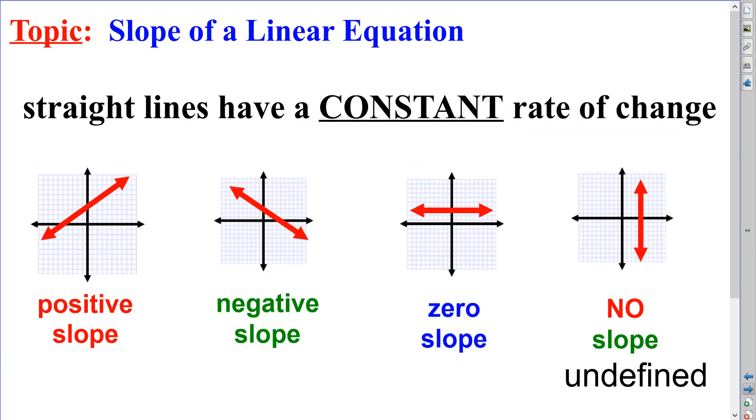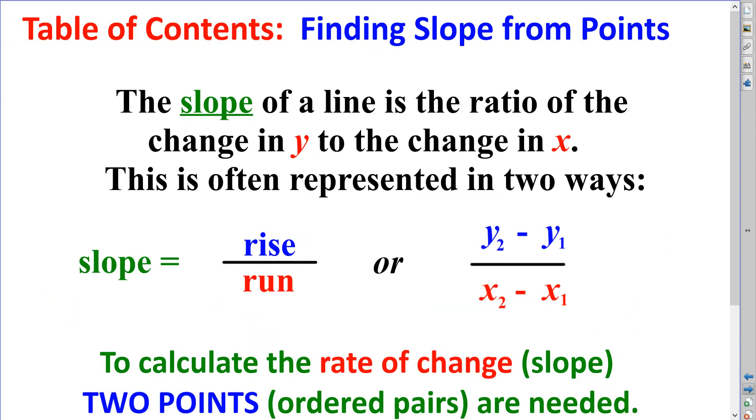A linear equation has a constant rate of change. Whether it is positive or negative, zero, or even undefined, it is constantly rising or lowering or staying the same at the same rate. So the slope of the line can be calculated as the ratio of the change in the y value to the change in the x value.